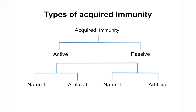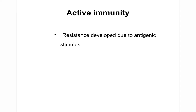Acquired immunity is mainly divided into two types: active immunity and passive immunity. Both active and passive immunity may be either natural or artificial. Active immunity is usually the resistance developed due to antigenic stimulus — when an antigen enters the body, it activates the immune system and an immune response specific to that antigen is generated.